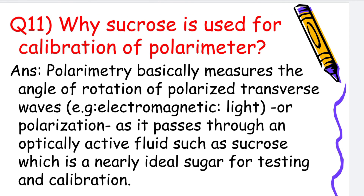Why is sucrose used for calibration of a polarimeter? A polarimeter basically measures the angle of rotation of polarized transverse waves. The light passes through an optically active fluid such as sucrose, which is a nearly ideal sugar for testing and calibration.